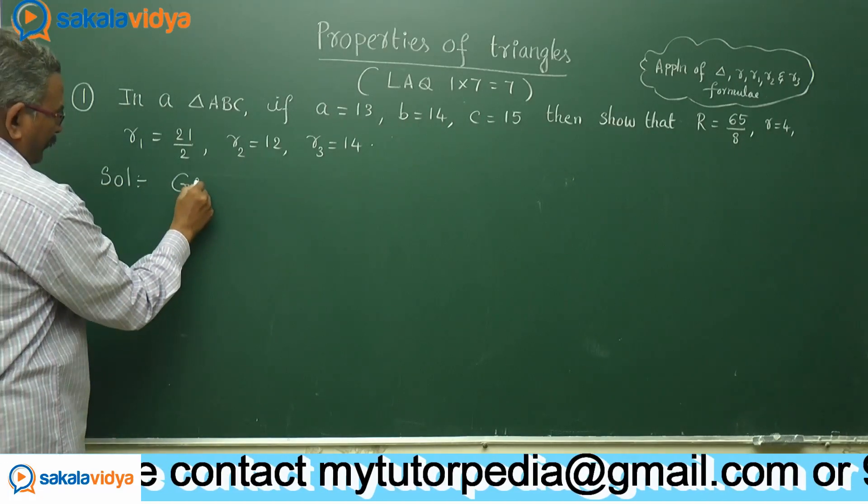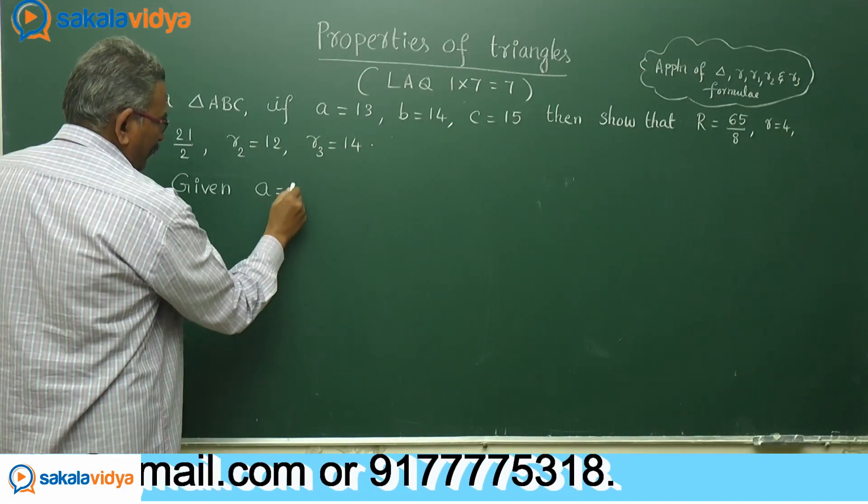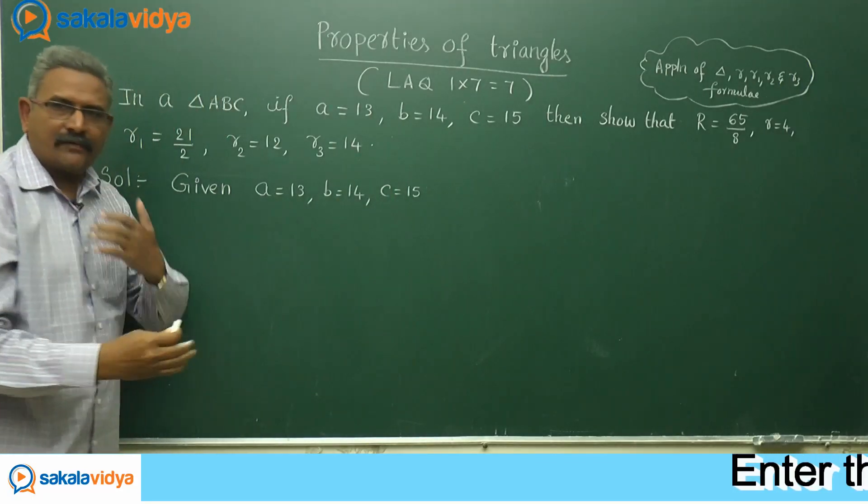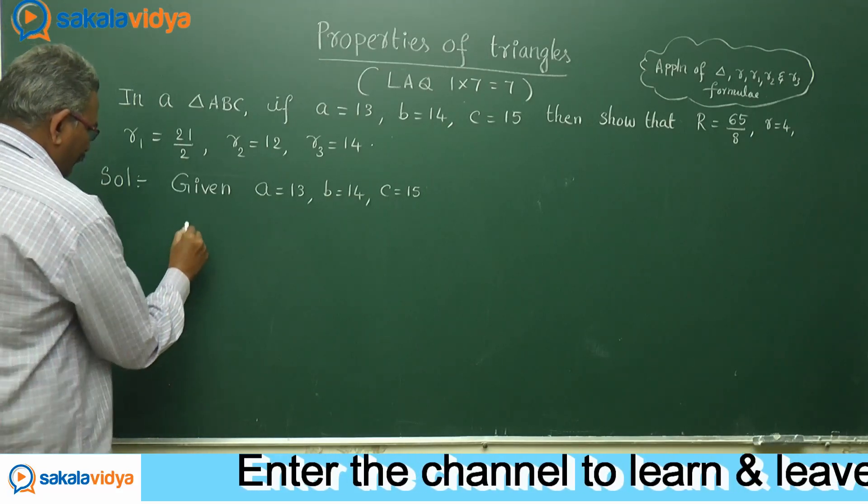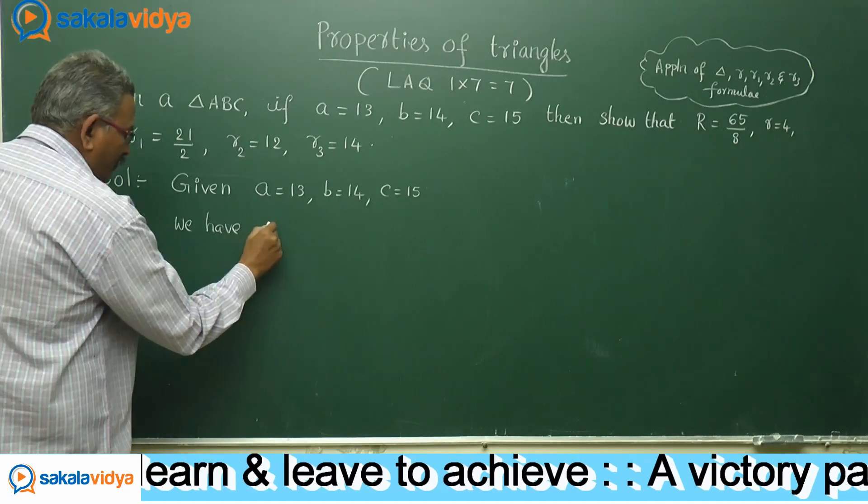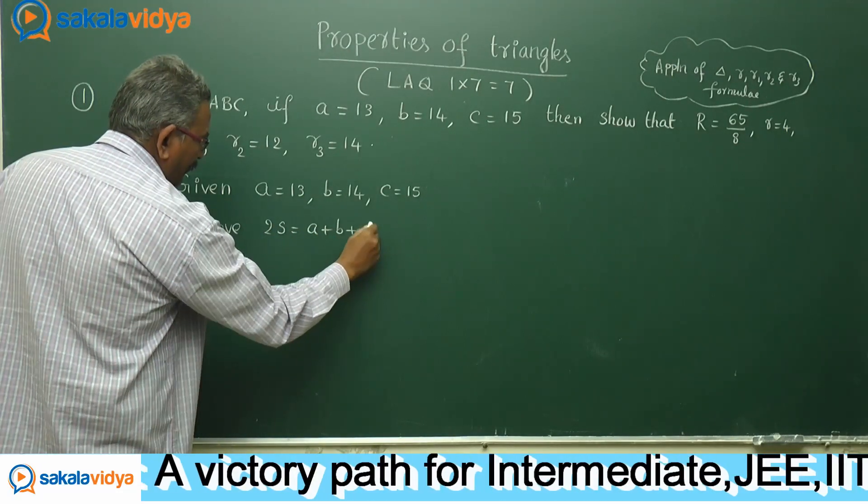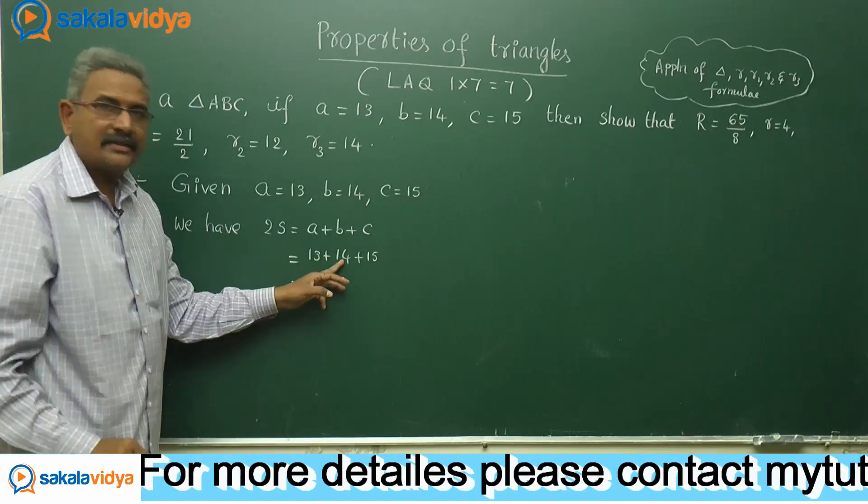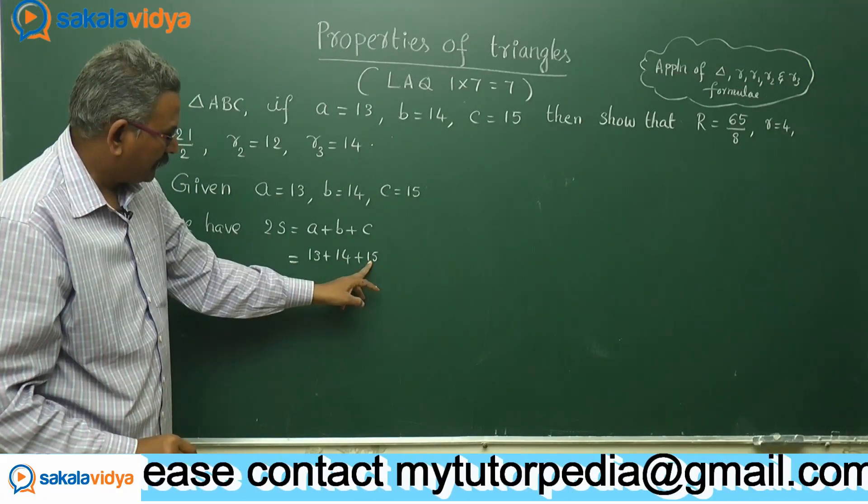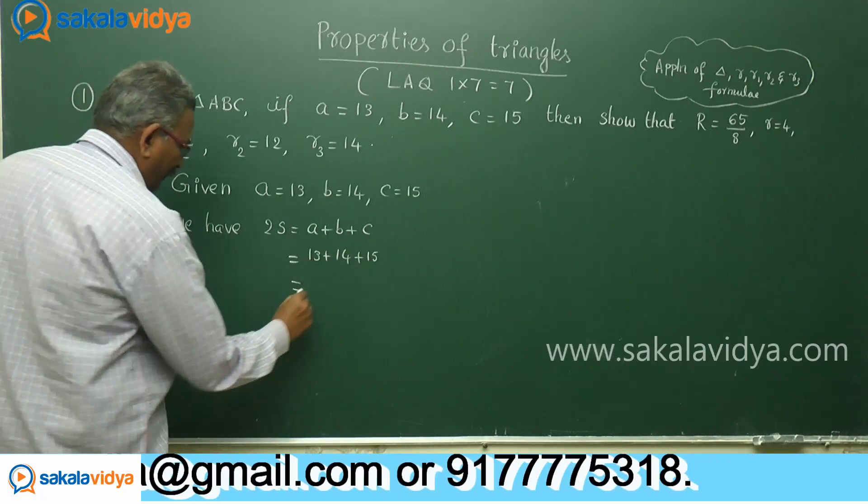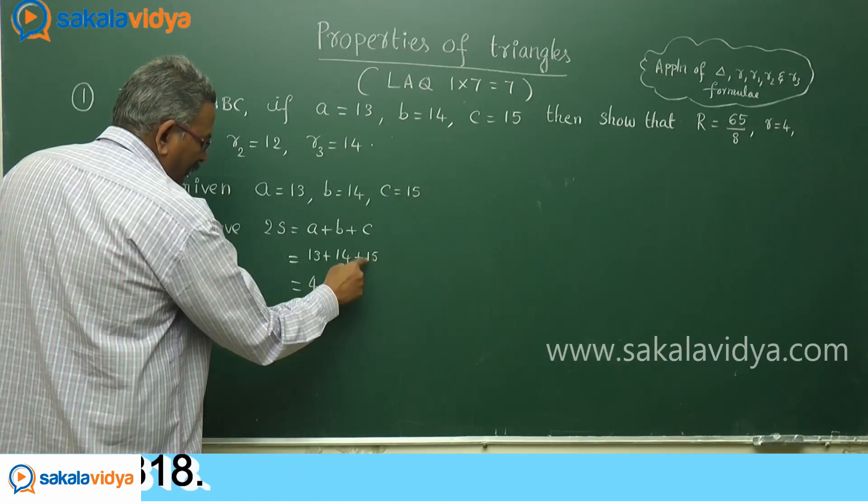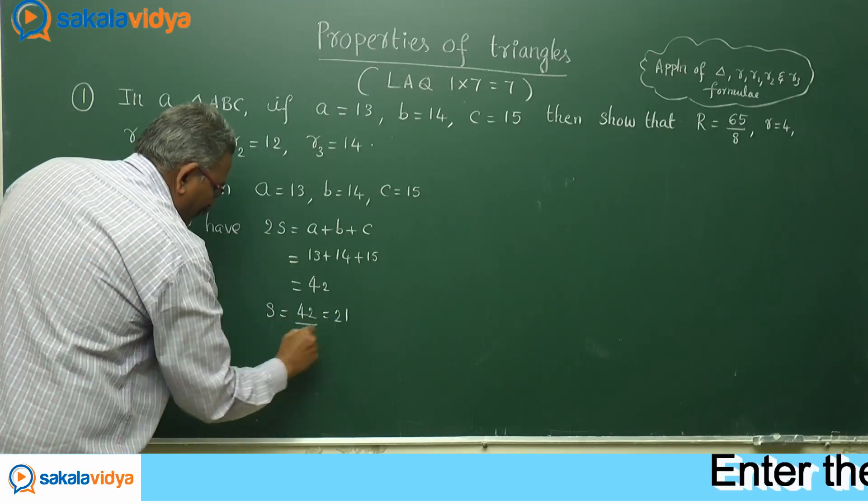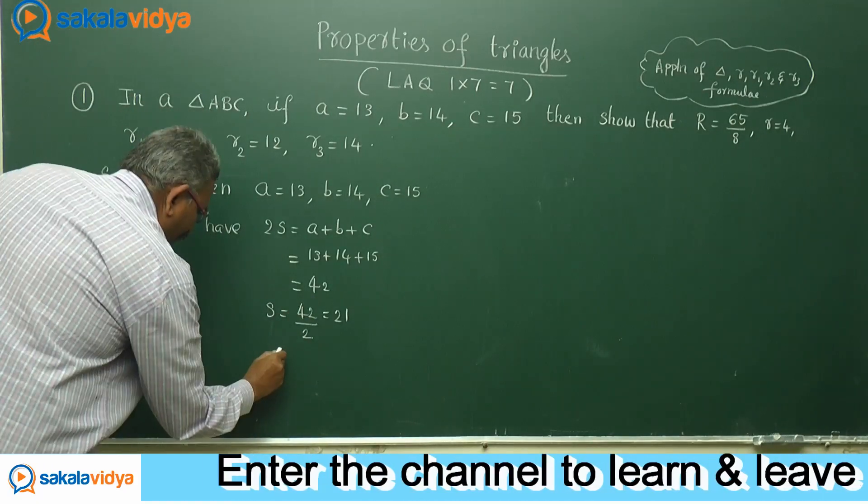Now, given small a is equal to 13, b is equal to 14, c is equal to 15. As per our plan, let us apply step 1. We have 2S is equal to A plus B plus C. So, 13 plus 14 plus 15. This is 13 plus 14 is 27, 27 plus 15 is 42. S is equal to 42 by 2, we get 21. The S value is equal to 21.